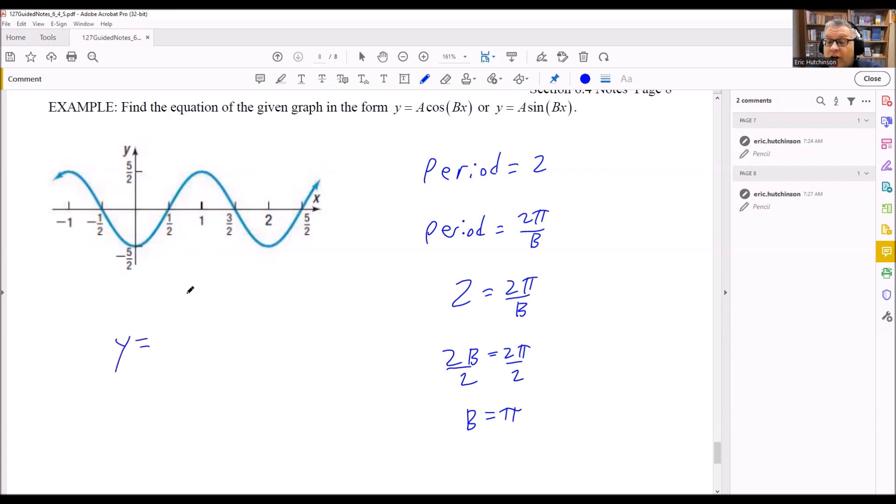So what we'll write is y equals negative 5/2. It's a cosine graph because it doesn't go to the origin. Cosine, and it's going to be πx. So this is the equation for this graph.